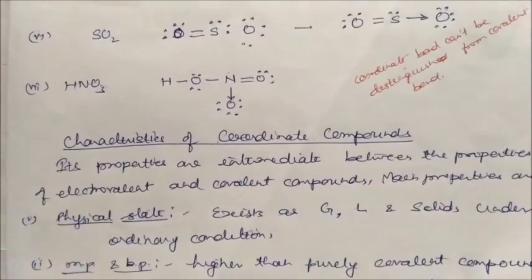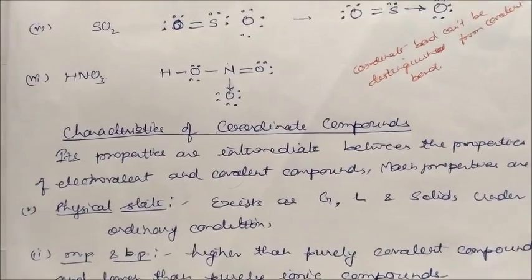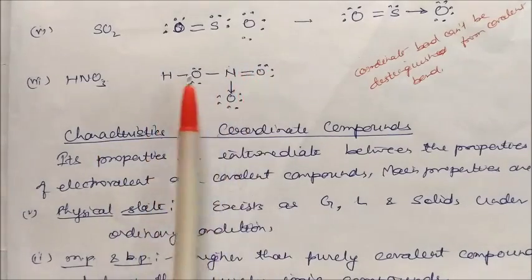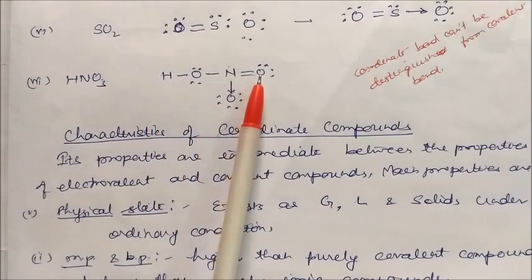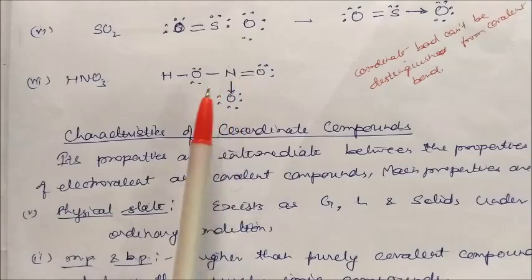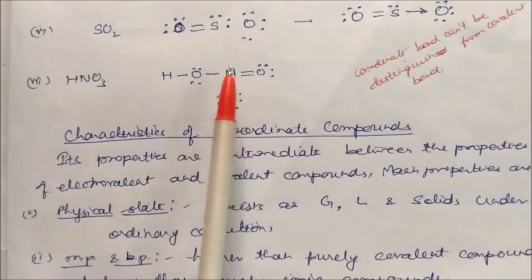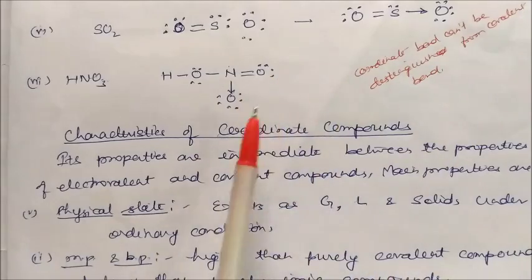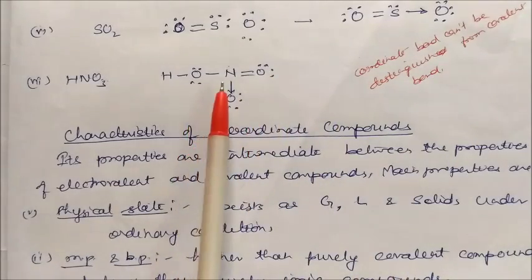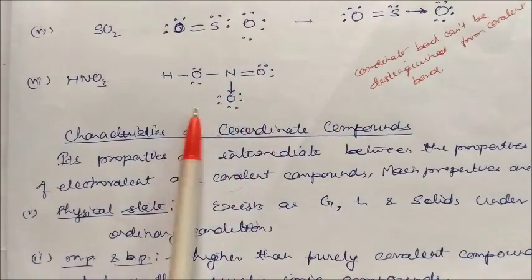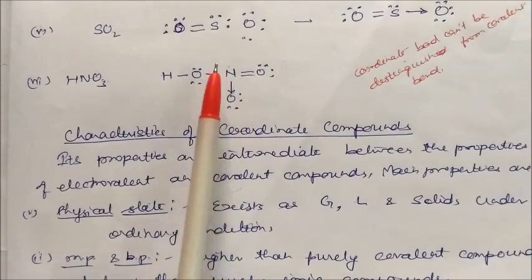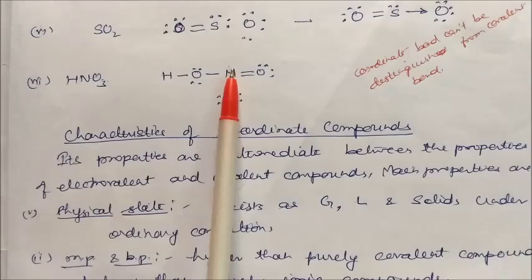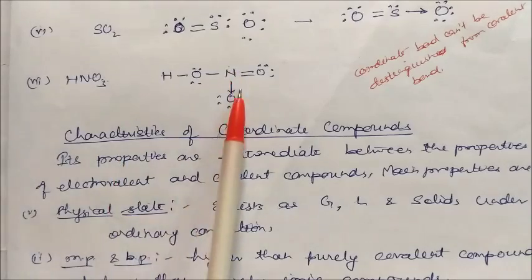These are important points which are asked during examinations. In the case of HNO3 — if you draw the structure — nitrogen can make a maximum covalency of four. So three bonds are covalent bonds and one is the dative bond or coordinate bond. Coordinate bond cannot be distinguished from the covalent bond. In practice, all appear as covalent bonds. Overall, HNO3 has nitrogen donating one lone pair to the oxygen.